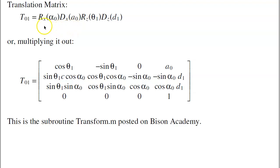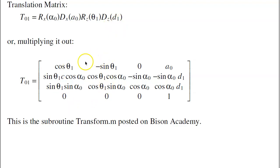Specifically, the transformation to go from reference frame 1 to reference frame 0 is: first rotate about the x-axis, alpha radians — that's the twist — then displace along the x-axis, rotate about the z-axis, and displace along the z-axis. That takes you to the next reference frame. Multiplying it out, you get a transformation matrix to go from reference frame 1 to reference frame 0. That's the subroutine 'transform' posted on Bison Academy.